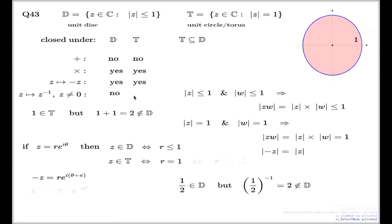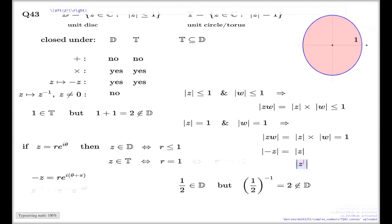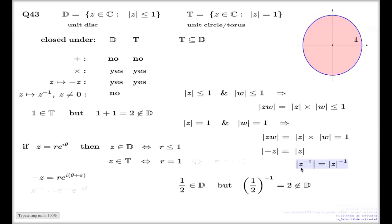What about T? Yes — you can argue this using the properties of absolute values. The absolute value of the inverse of a complex number is the inverse of the absolute value. So if you have a complex number from the Torus for which the absolute value is one, the absolute value of its inverse will be one again. So the answer for T is yes.